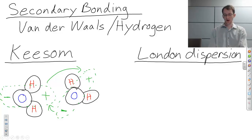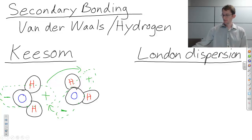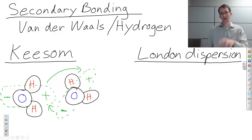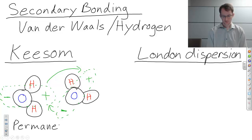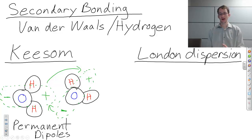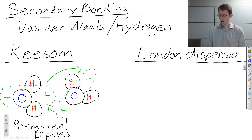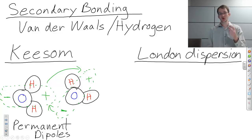This right molecule will rotate to align itself with the other water molecule. A London dispersion force is not about dipoles that are already there. A Keesom interaction has to do with dipoles that have been created and are called permanent. The only way to destroy this dipole is to rip the hydrogens from the oxygen atom. In the London dispersion force, we have induced dipoles.